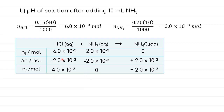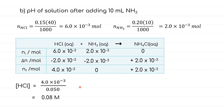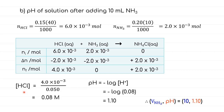The final reaction shows only HCl remaining as a strong acid. We calculate the new concentration of HCl: [HCl] = (4.0 × 10⁻³) / (50/1000) = 0.08 M, where 50 mL is the total volume (40 mL HCl + 10 mL NH₃). Since HCl contains H⁺, we calculate pH = −log(0.08) = 1.10. So when 10 mL of NH₃ is added, the pH increases to 1.10.